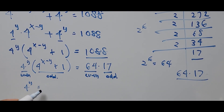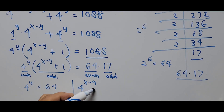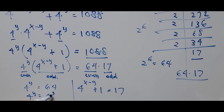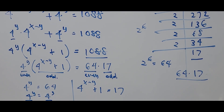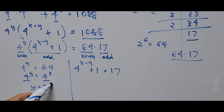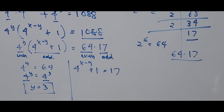Equating even to even and odd to odd: 4 to the power of Y equals 64. Since 64 can be written as 4 raised to the 3rd power, and both sides have the same base, we can equate the exponents. Therefore, Y equals 3.